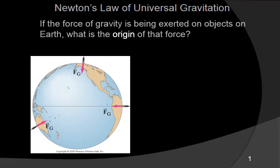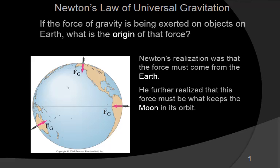Newton wrestled through that. If we consider people on different parts of the world, they're all being pulled to the center of the Earth. Newton realized that the force must come from the Earth itself. He also realized it must be what keeps the moon in orbit. The origin of that force is the Earth itself, and it turns out the mass of the different objects is the cause.